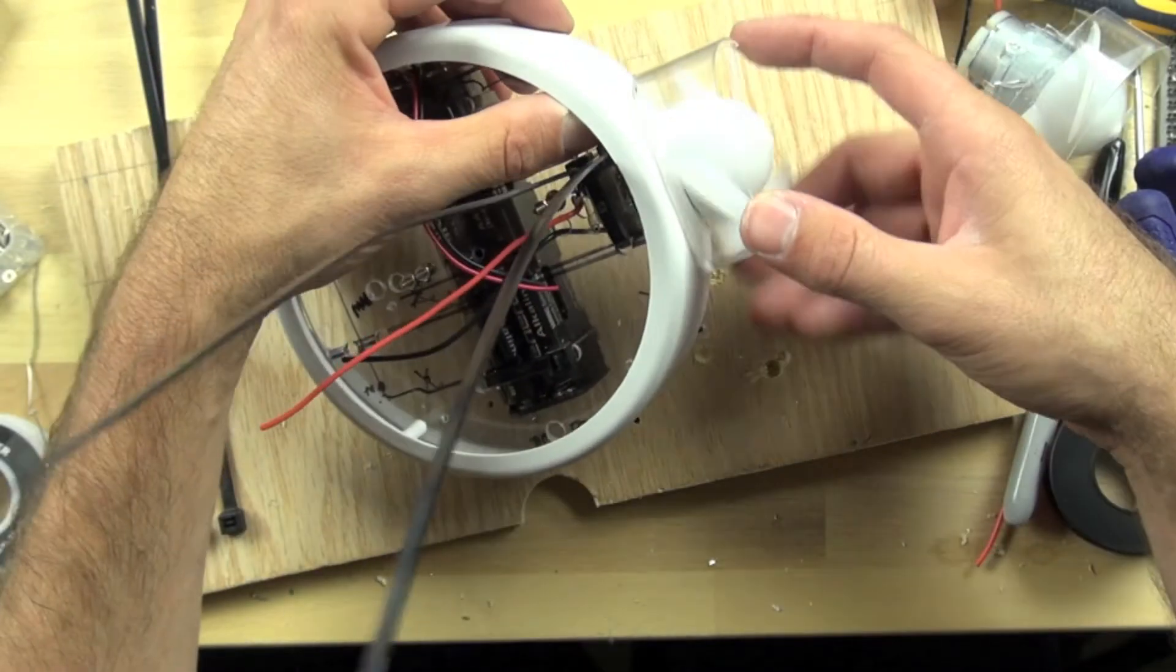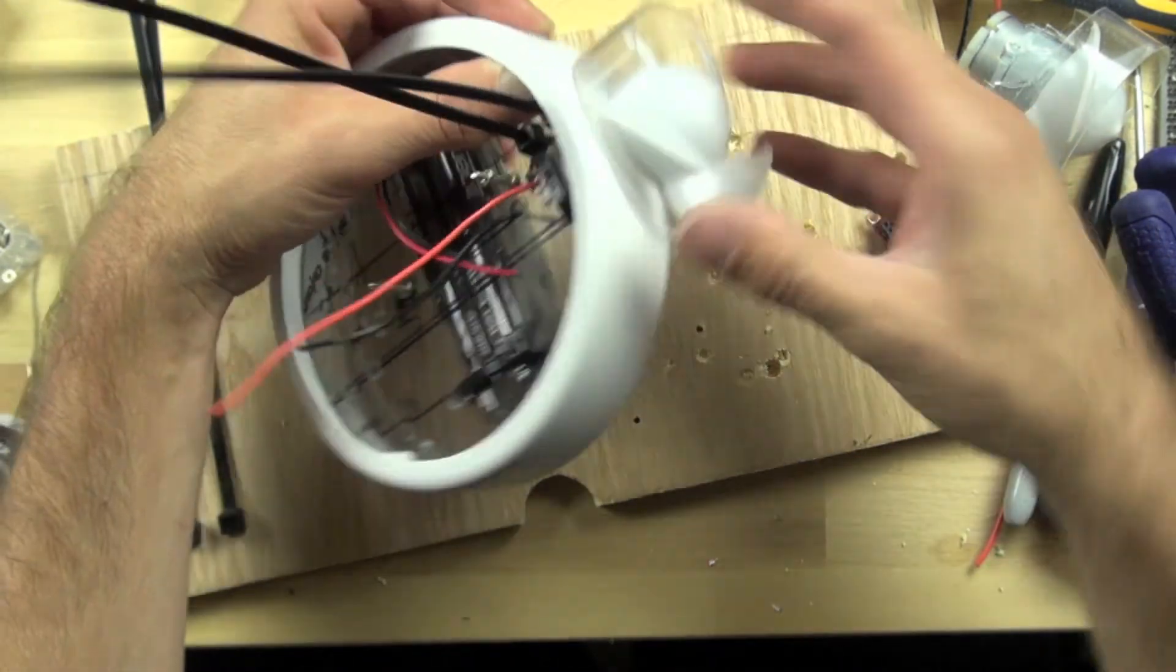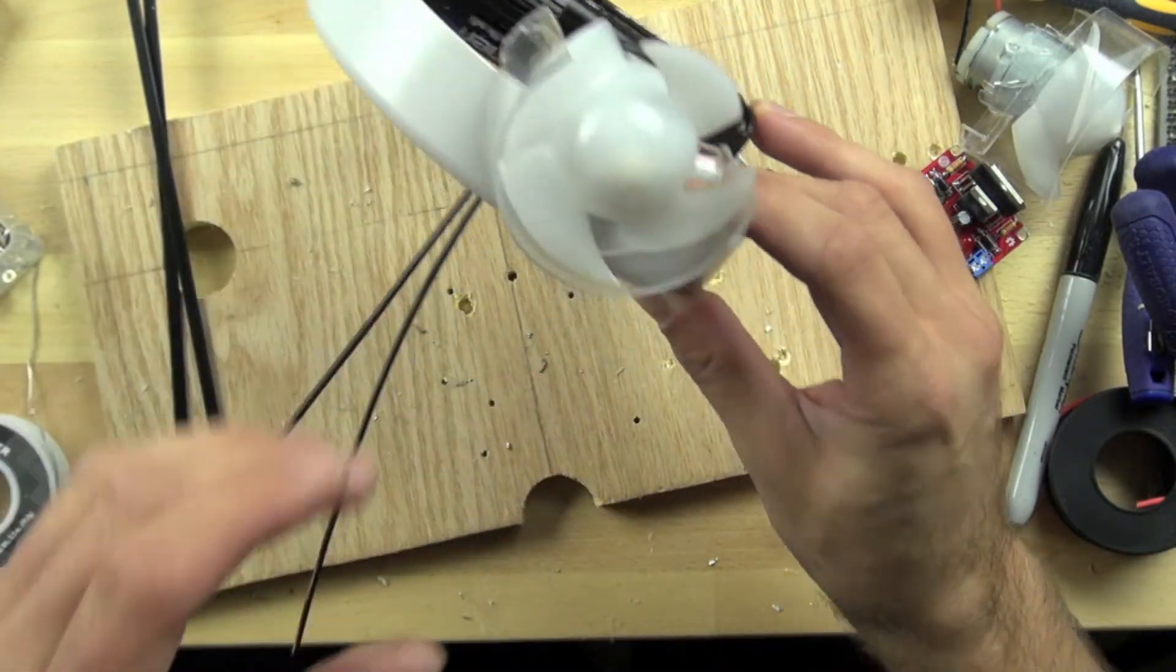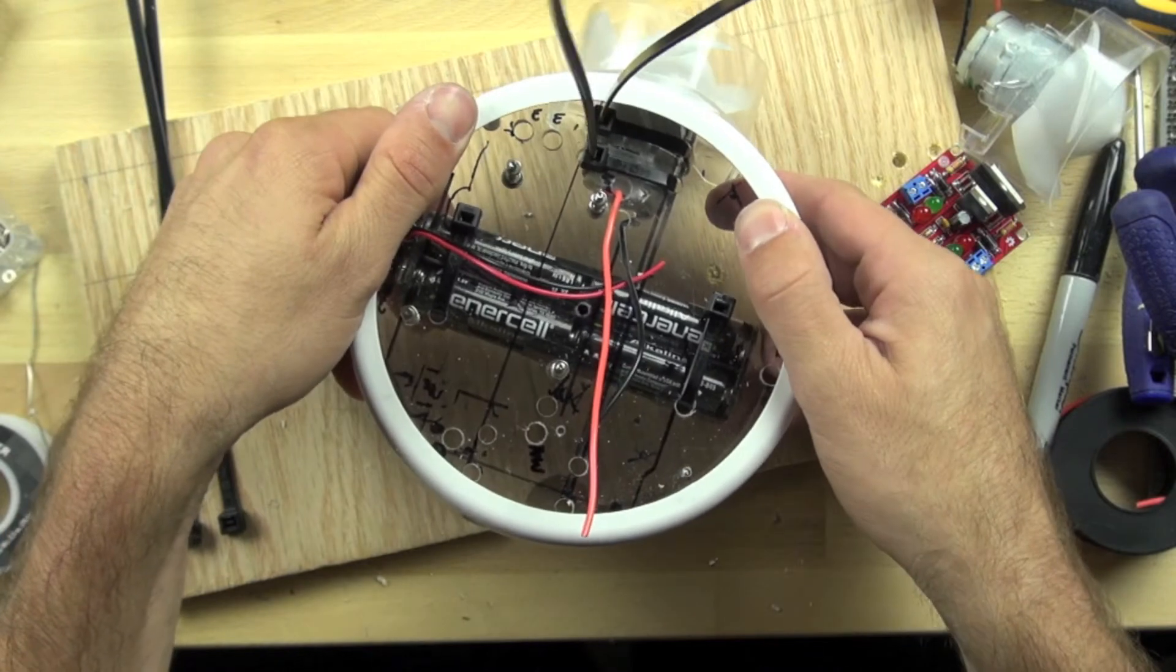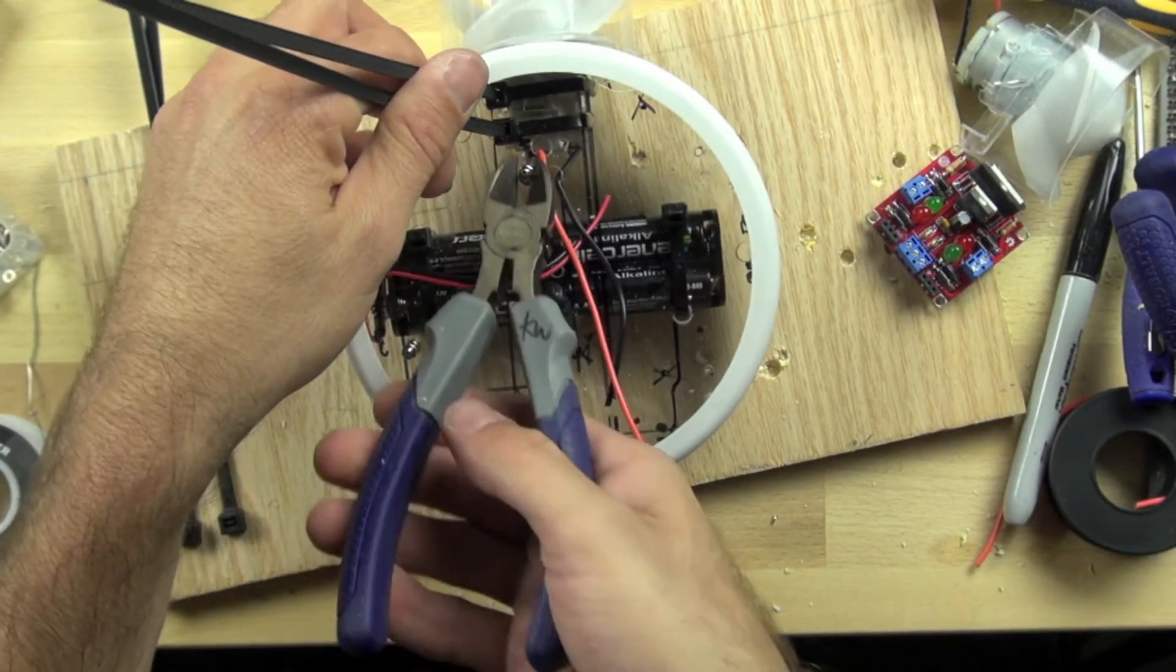So those are in, let's double check the wheel turns freely. And it's in there pretty good. Looks pretty decent and seems like it can support a little bit of load. So we'll go ahead and trim off these guys.